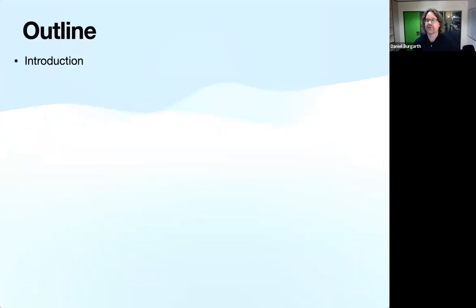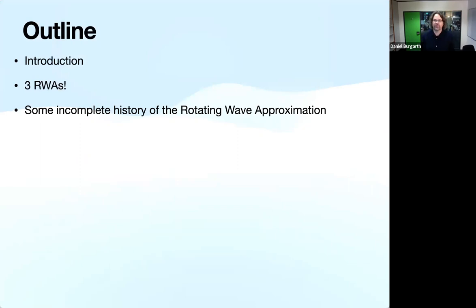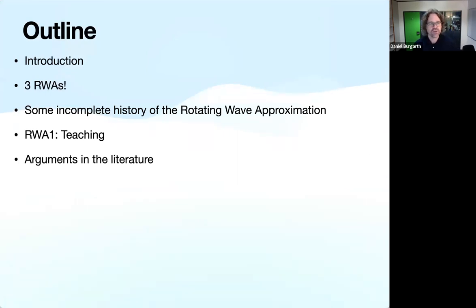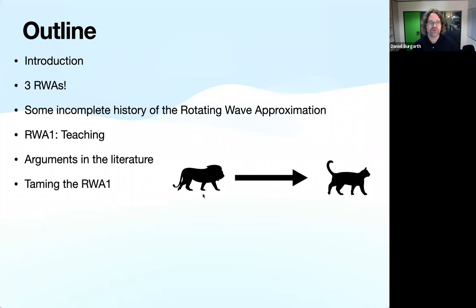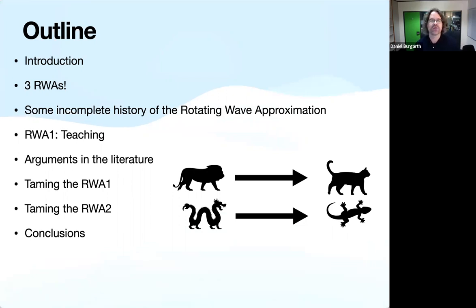The outline of my talk is straightforward. I'll give an introduction to the rotating wave approximation, and the key point I want to make is that there are actually three quite different rotating wave approximations. I'll give an incomplete history of the RWA, then focus on the first RWA and arguments in the literature for its validity, then 'tame' it. I'll also address RWA number two — an even more beastly beast that we recently succeeded in taming. The third rotating wave approximation, concerning open quantum systems, is work in progress, so I won't report on it here.